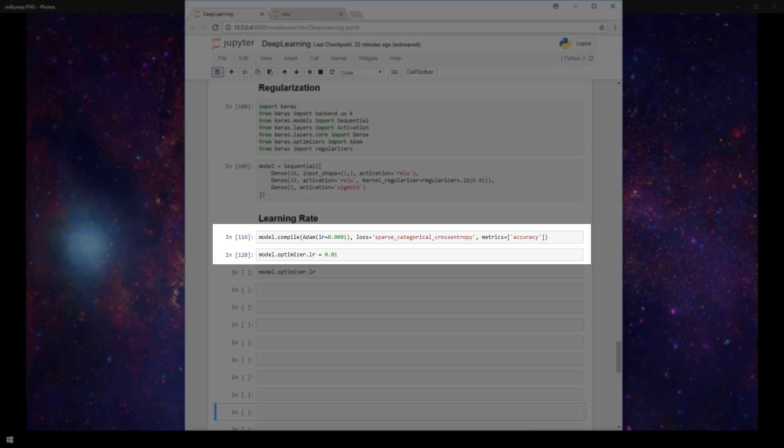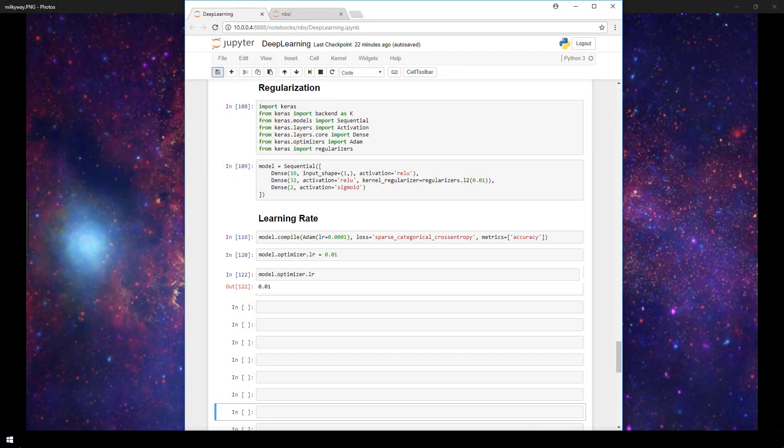After compiling our model, we can set the learning rate by setting model.optimizer.lr to our designated value. Here we can see that I'm setting it to .01. Now if we print the value of our learning rate, we can see it's now changed from .0001 that we specified when we compiled our model to .01 now. And that's really all there is to it for specifying the learning rate for our model in Keras.